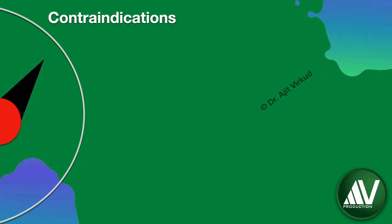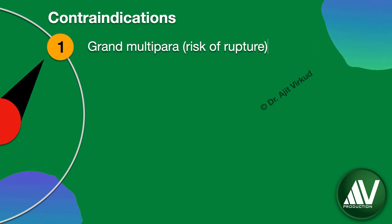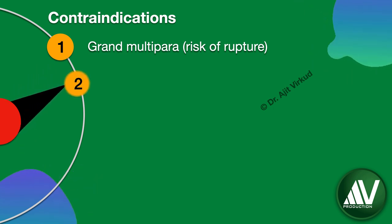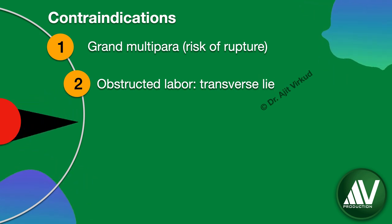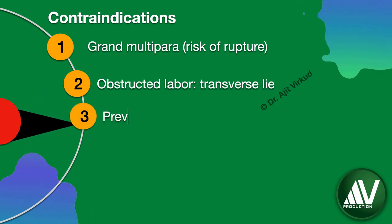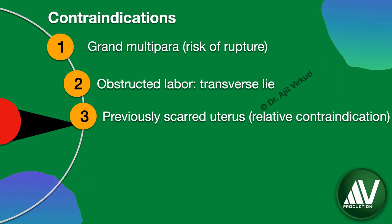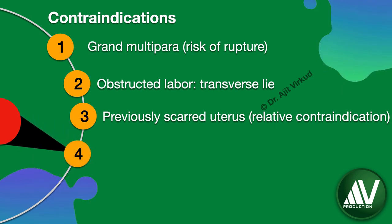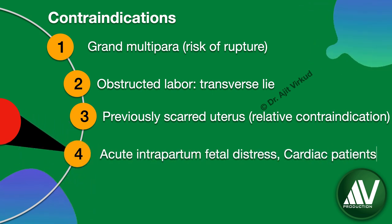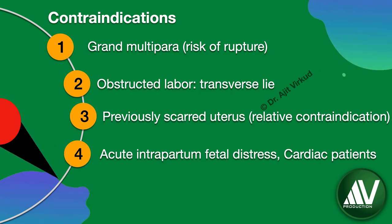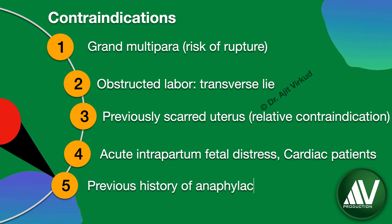Contraindications to the use of oxytocin are: grand multipara because of the risk of uterine rupture; where vaginal delivery is not feasible, e.g., obstructed labor or transverse fetal lie; previously scarred uterus, which is a relative contraindication; acute intrapartum fetal stress; cardiac patients where intravenous fluids are contraindicated; and previous history of anaphylactic shock following oxytocin administration.